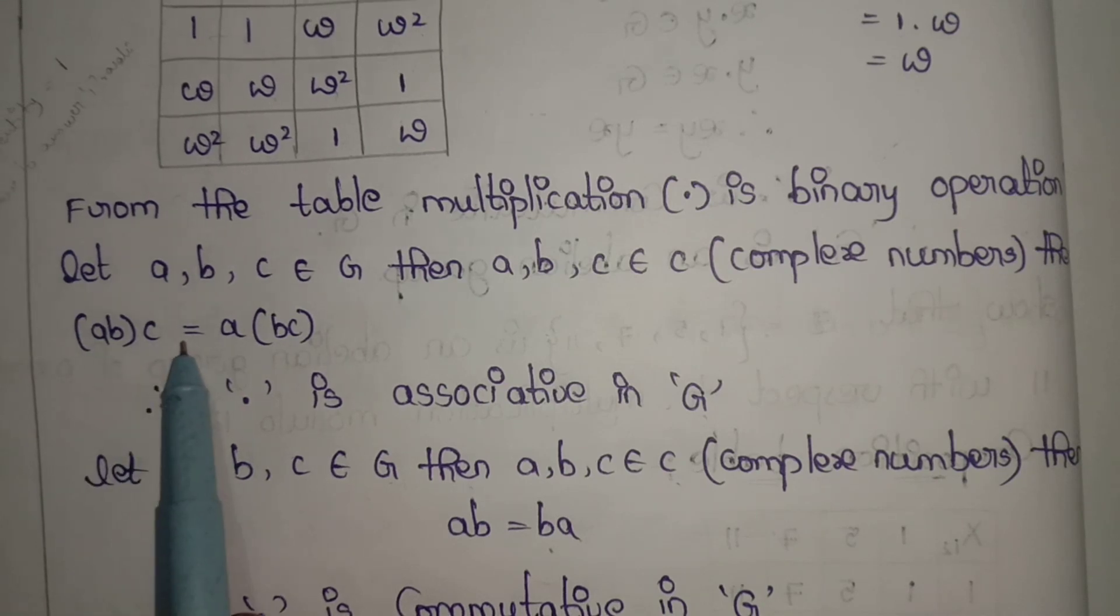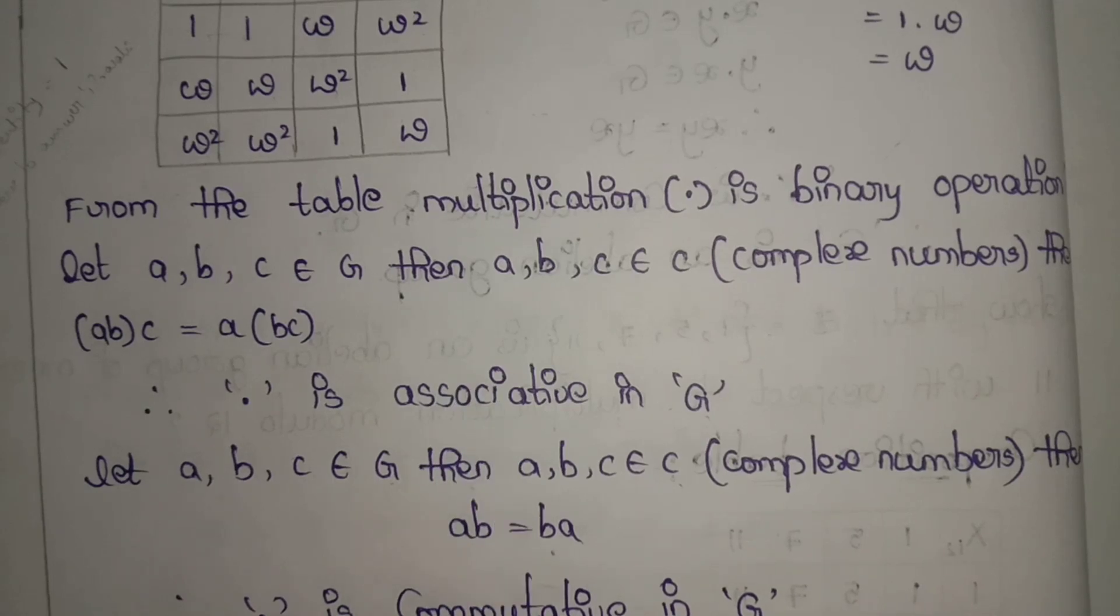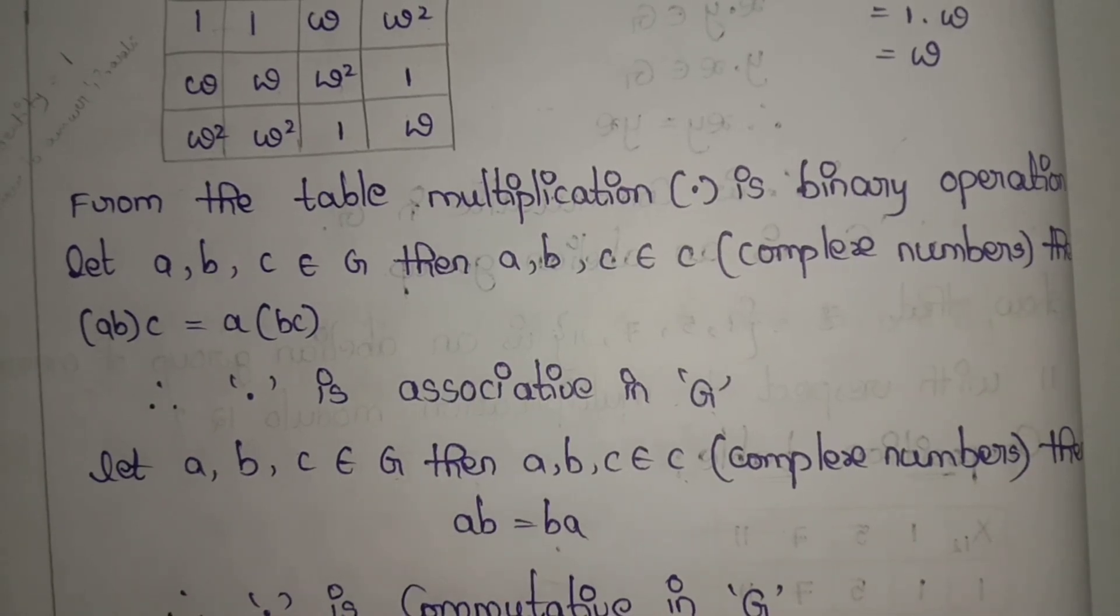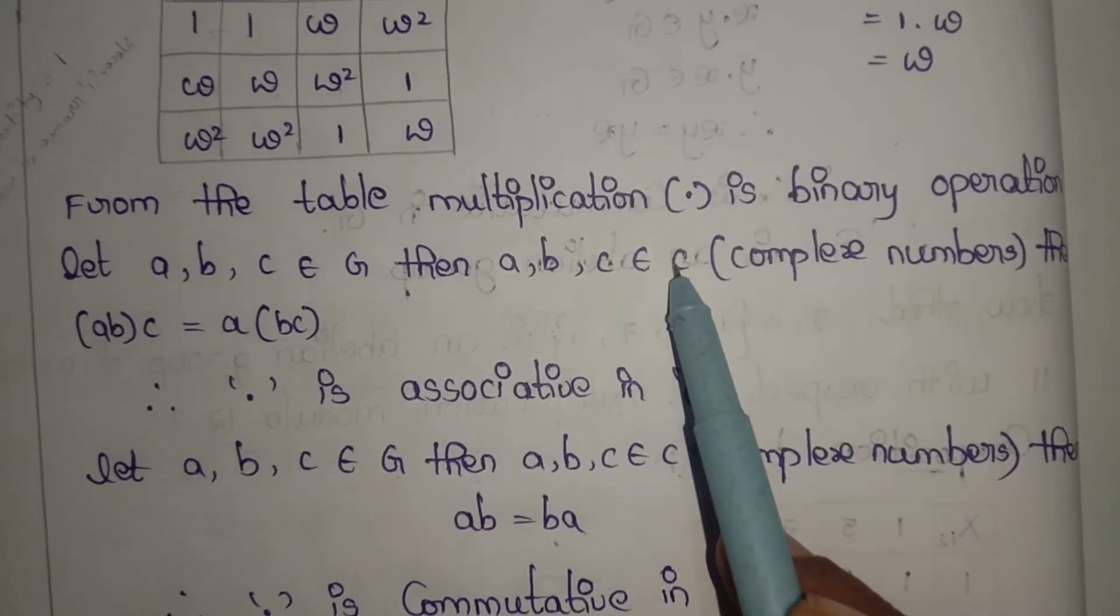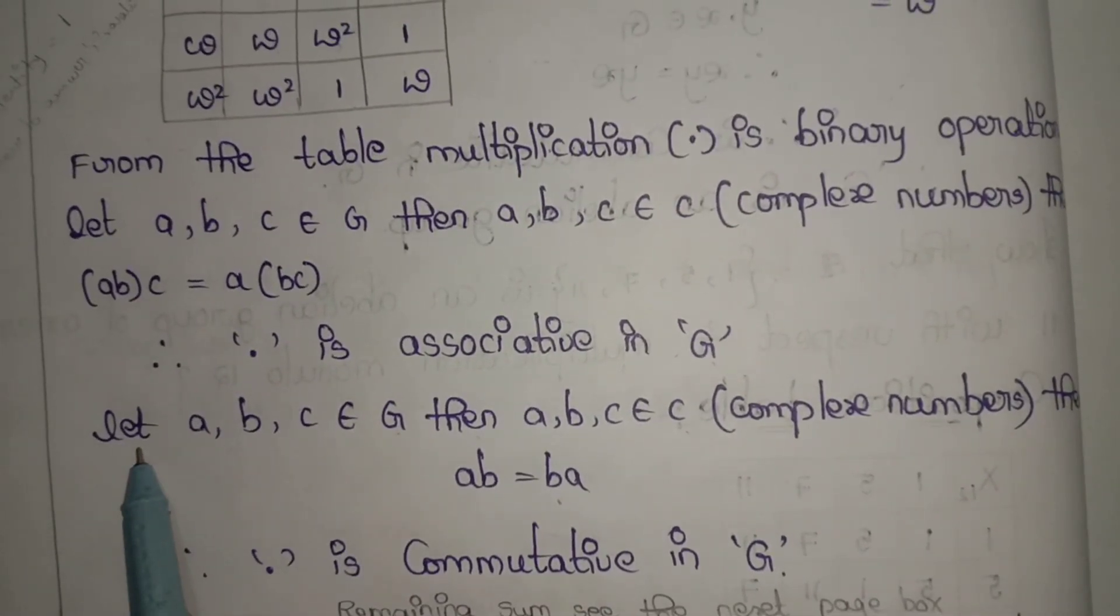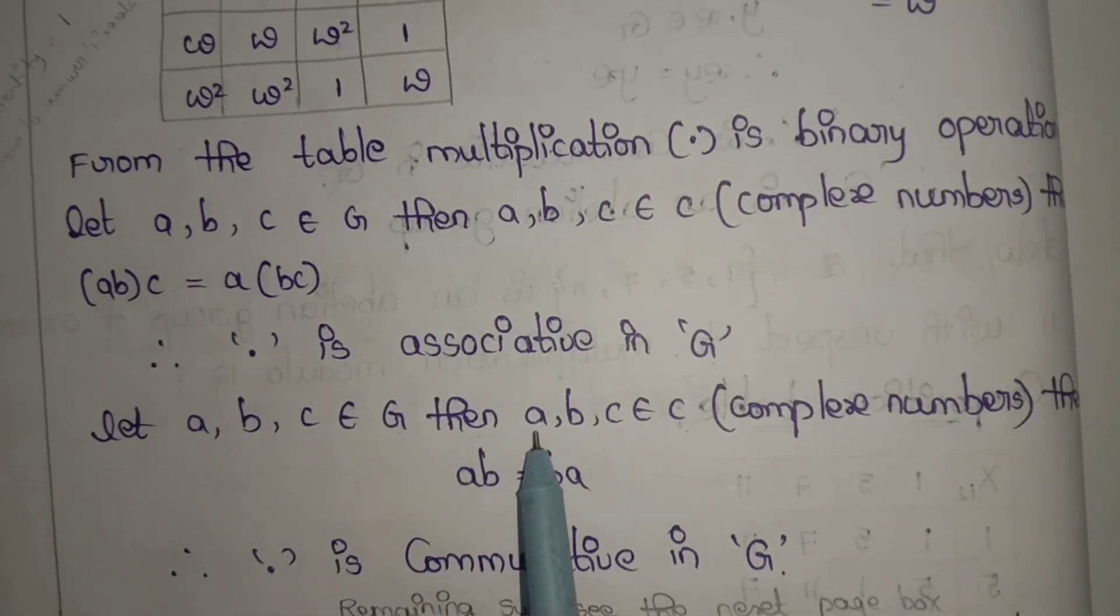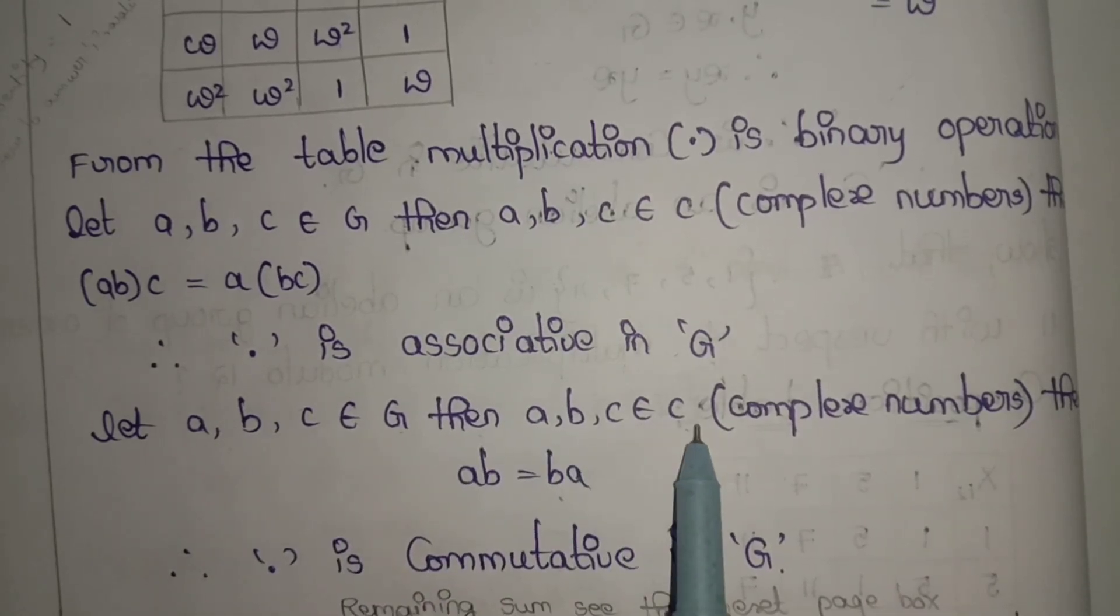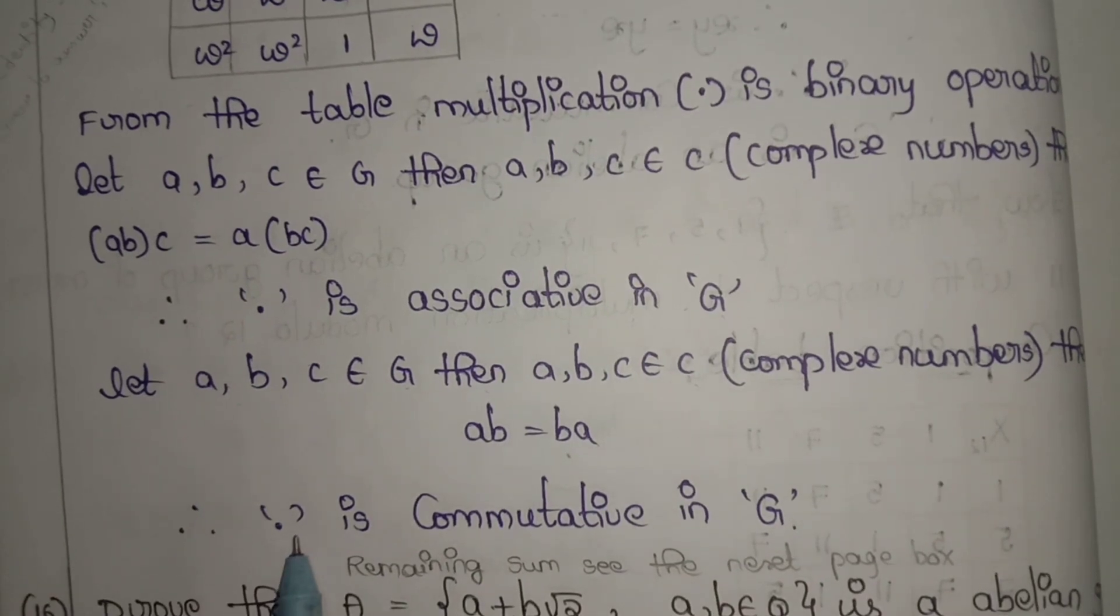Then a times b times c equals a times b times c. This is the associative property. First property is the closure property, second property is the associative property. Third one is the commutative property. Here, let a, b, c belong to G, then a, b, c belong to C, the complex numbers. Then a into b equals b into a, so dot is commutative in G.